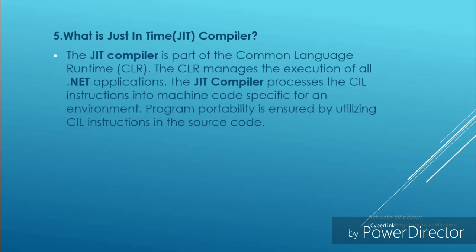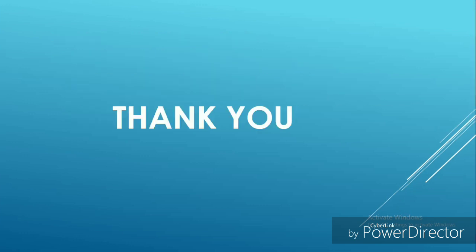Last question: what is the just-in-time compiler? The just-in-time compiler is a part of the common language runtime. The common language runtime manages the execution of all .NET applications. The just-in-time compiler processes the common intermediate instructions into machine code specific to the foreign environment. Program portability is ensured by utilizing common intermediate language instructions into source code.